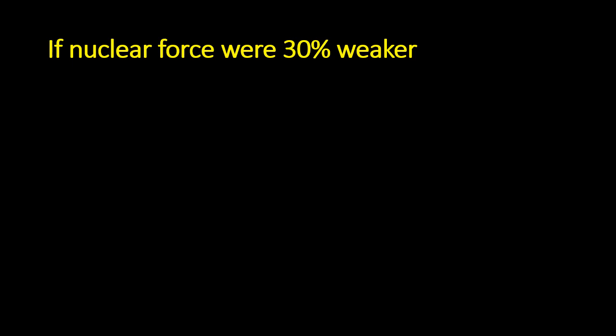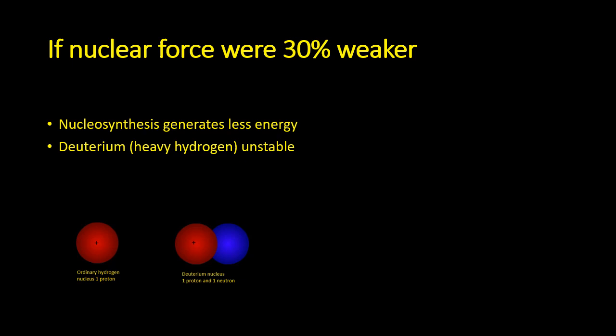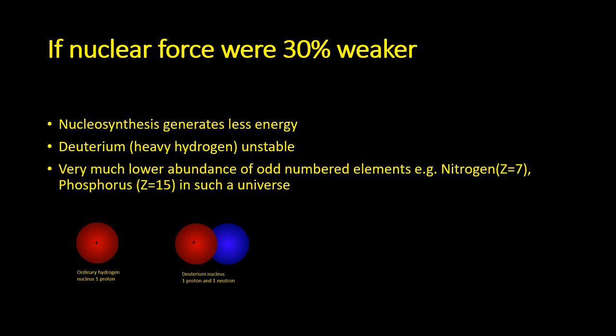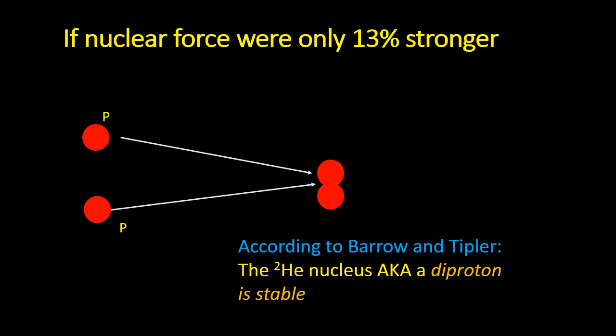However, the nuclear force doesn't even have to be the full three times weaker to prevent the development of life. Barrow and Tipler point out if it was only 30% weaker, this would have two significant effects. Firstly, the nuclear reactions which occur in stars would generate significantly less energy. But even more importantly than this, Deuterium, heavy hydrogen, would be unstable. Now, Deuterium is an important component in the nuclear reactions which create the odd number elements such as Nitrogen, Phosphorus and Sodium. So without Deuterium, the abundances of these odd number elements will be very low, and these elements are essential for the chemistry of life.